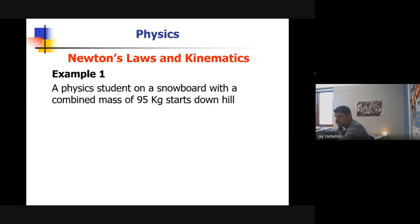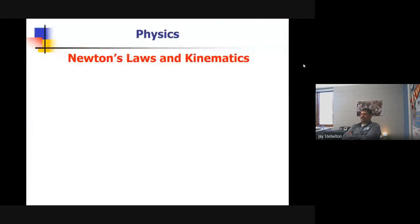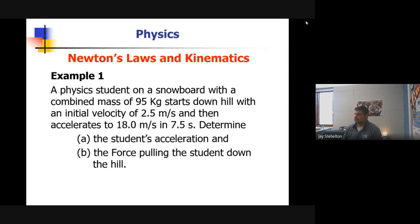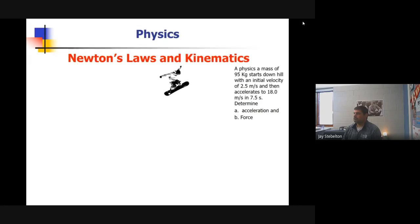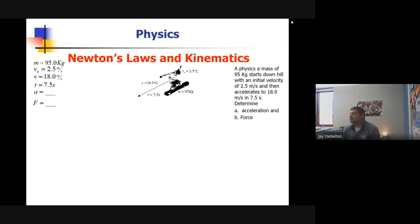A physics student on a snowboard with a combined mass of 90 kilograms starts downhill. You know, snowboarding. Gotta be a cool cat somewhere up in the Rockies fixing to bomb a hill. Well, if that 95 kilogram student starts down the hill with an initial velocity of 2.5 meters per second and then accelerates to 18 meters per second in 7.5 seconds, determine the student's acceleration and the force pulling the student down the hill. I've read it. So, after I read it, I diagram it. And there we go. Bombing the hill. 95 kilograms. We start at 2.5 meters per second and accelerate to 18 meters per second in 7.5 seconds. Read it, diagrammed it. After I diagram it, I list the mass of 95 kilograms. The initial velocity at 2.5 meters per second. The final velocity at 18 meters per second. The time of 7.5 seconds. What's the acceleration and the force?